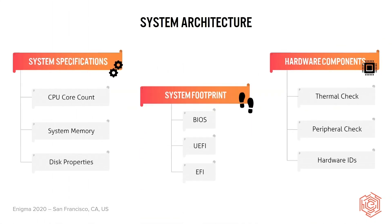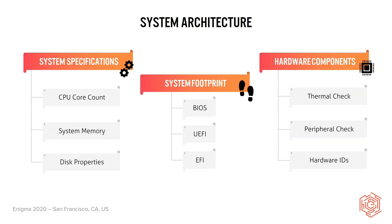To start off, we were able to define the system architecture category, which aims to collect information about how the system is composed physically. The first sub-technique, system application specifications, tries to get information about the methods that rely on how the system is composed itself. As an example, we have the CPU core count, which is the number of CPUs a system has, the available RAM memory, or just some disk properties, such as the size or available partitions.